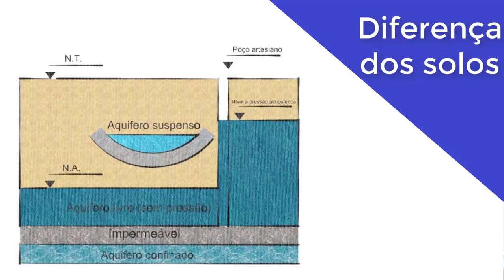Esse perfil de solo, que exemplifica as formas onde a água é encontrada, é muito importante para que a gente possa fazer estudos de capacidade de carga de estacas e assim por diante. Quando tenho água presente no meu solo, tenho uma baixa na resistência do solo, por exemplo, no atrito lateral — algo que veremos mais à frente com um exemplo bem interessante quando eu estiver falando de estacas.